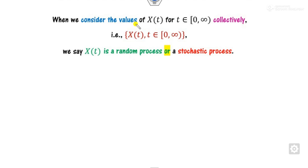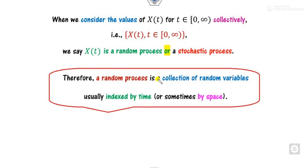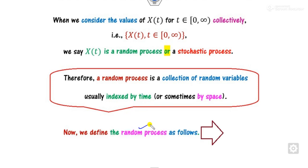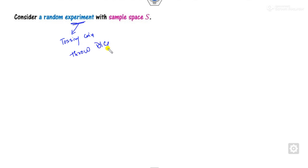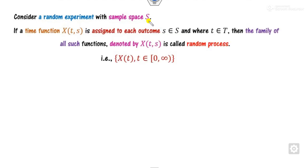In general, we collect the values of X(t) varying over the entire index. That collection is called the random process, or also the stochastic process. A random process is nothing but a collection of random variables specifically indexed by time or space. To define it formally: assume you perform an experiment — tossing a coin, throwing a dice, picking a ball — then from the sample space, if you assign a time function to each outcome, the collection of all those families is called the random process.